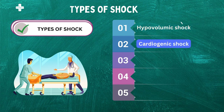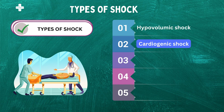Next, cardiogenic shock. This type of shock occurs when the heart is unable to pump enough blood to the body's organs and tissues. This can be caused by a heart attack, heart failure, or other conditions that affect the heart's ability to function properly.